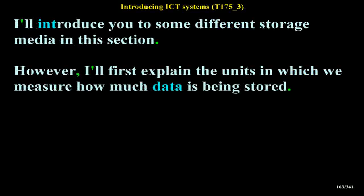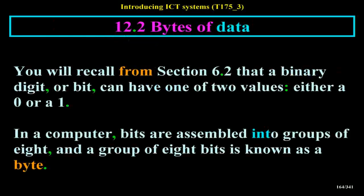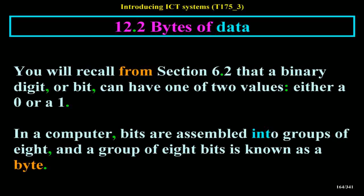I'll introduce you to some different storage media in this section, but first I'll explain the units in which we measure how much data is being stored. You will recall that a binary digit, or bit, can have one of two values: either a 0 or a 1. In a computer, bits are assembled into groups of 8, and a group of 8 bits is known as a byte. The abbreviation used for a byte is B, so 512 bytes would be written as 512 B.